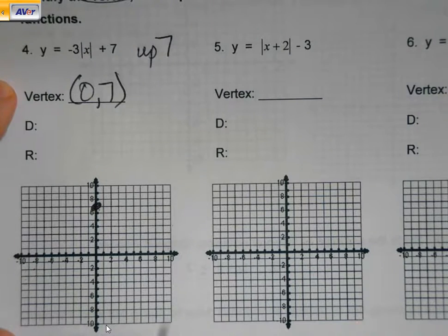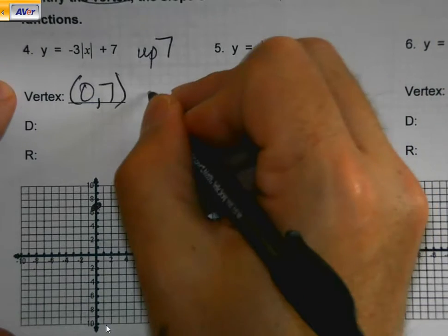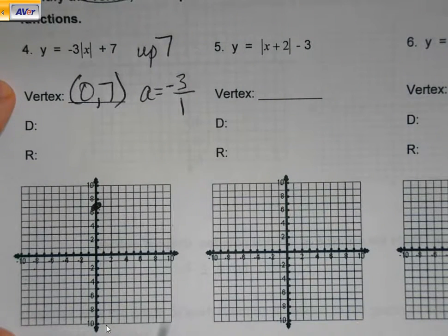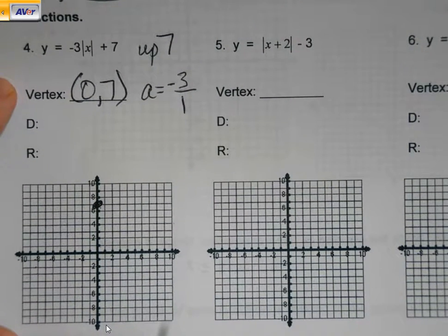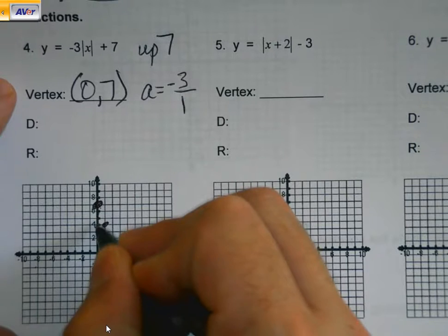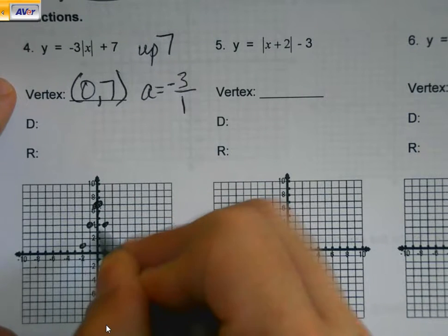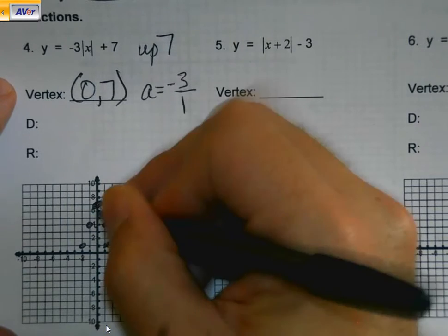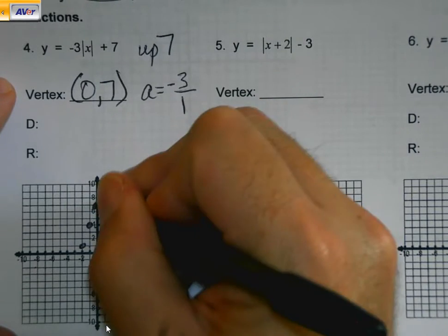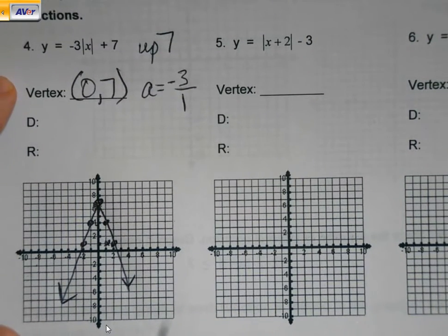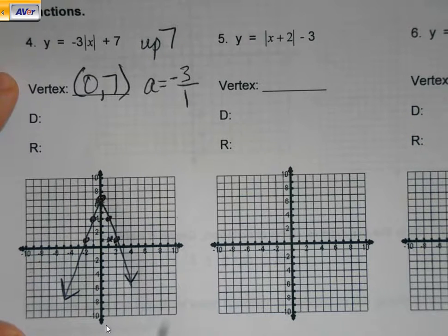To graph the rest of it, my a value is negative 3 over 1, which tells me my graph is going to open downward. But remember, this isn't true slope. It's like air quote slope. So I'm going to go down 3 and over 1, but I've got to do it both directions. And I'm going to do it a couple of times to get my graph done.